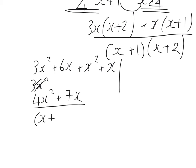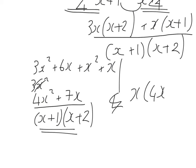Over x plus 1 bracket x plus 2. I can now factorize the top, so that'll be x bracket 4x plus 7 over x plus 1 times x plus 2. I'm going to check, can everything be simplified? And it can't. So that's the final answer.